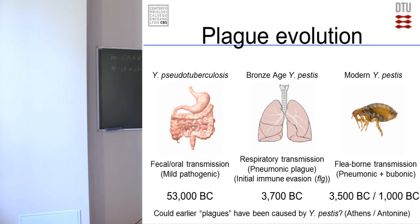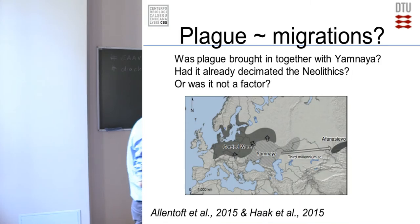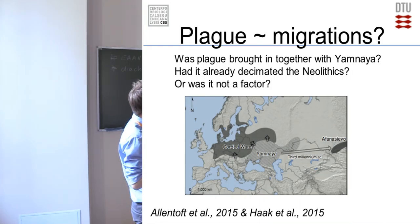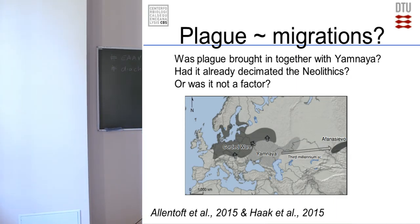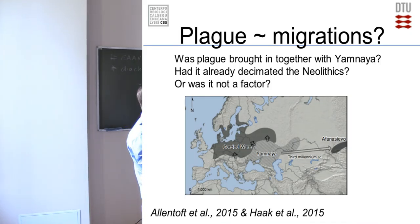This also raises the question: could earlier plagues have been caused by Y. pestis? Definitely things like the Plague of Athens and the Antonine Plague need further investigation. Since this was an archaeological conference, I also put in a slide thinking about the Bronze Age: we had the migration of the Yamnaya people from the Pontic-Caspian steppe into Europe and over to the Altai Mountains. Perhaps plague was brought in together with the Yamnaya migration, or had it already killed off some of the Neolithic population making room for the Yamnaya?